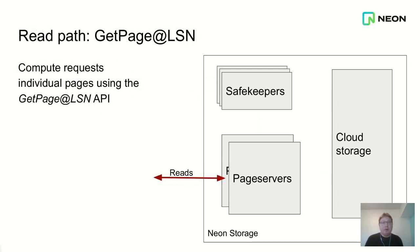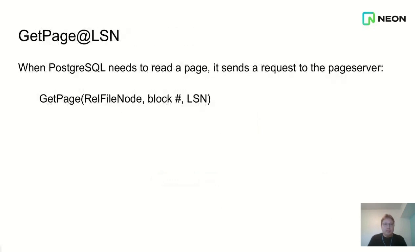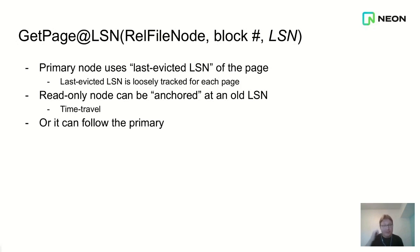That's the write path. On the read path, it gets interesting. Neon storage also replaces your backups — it handles all of the storage. Whenever the compute node needs to read a page, it works with a request-response system. It sends a request to the page server via a function called getPageAtLSN — it requests a particular page at a particular point in time. In your primary node, it always requests the latest version of each page. But you can also spin up a read-only node at an older point in time, which allows you to do time travel queries — and that's why you don't need traditional backups anymore.